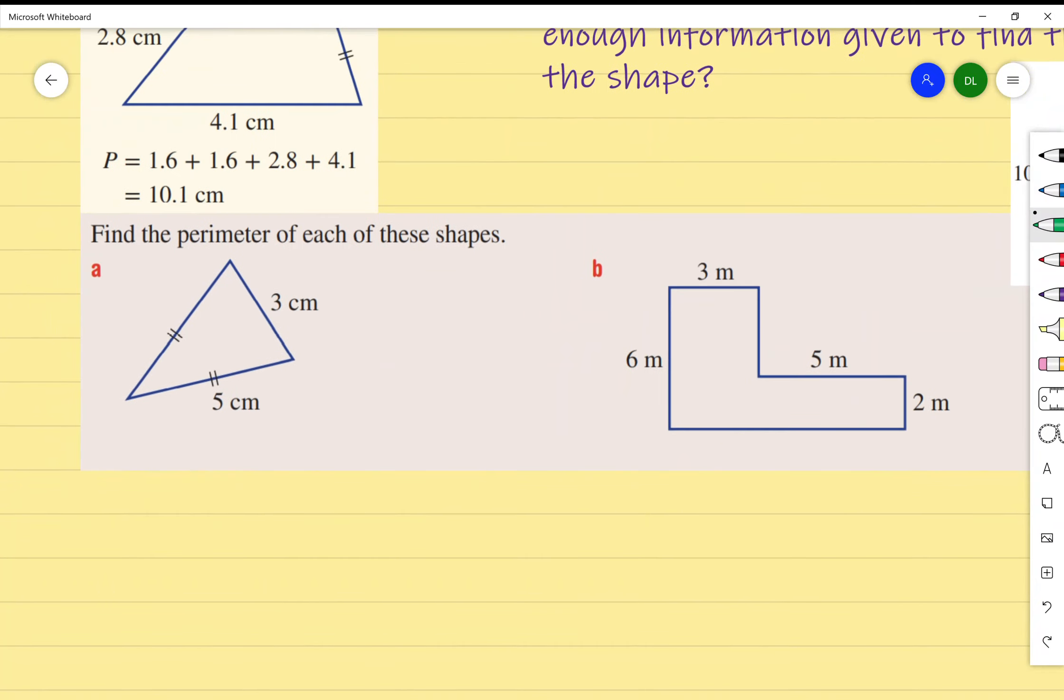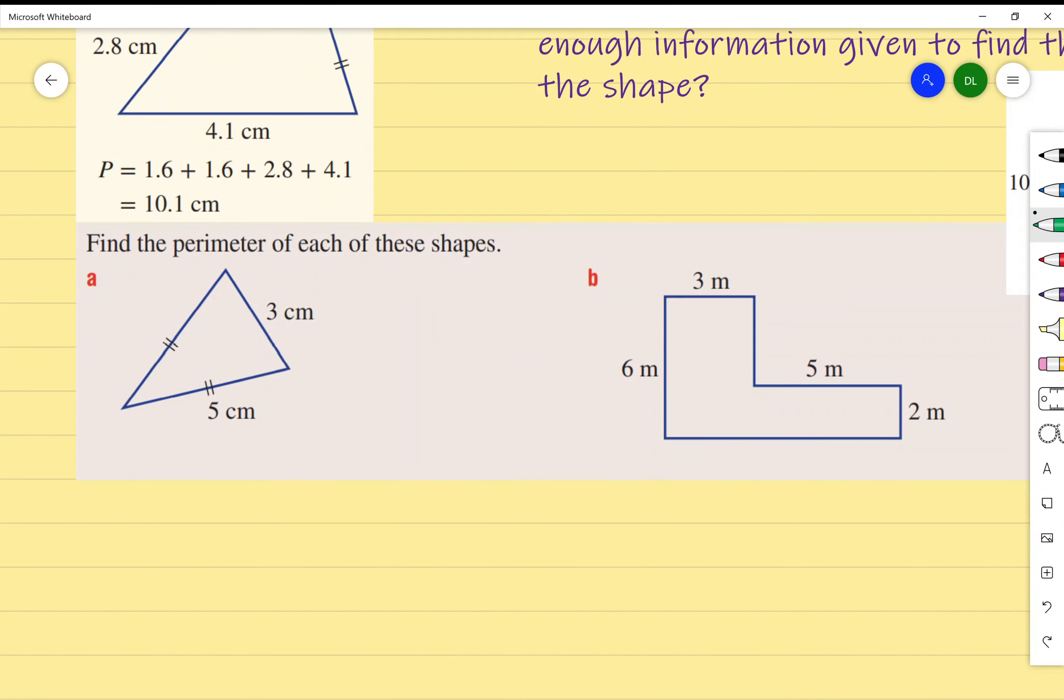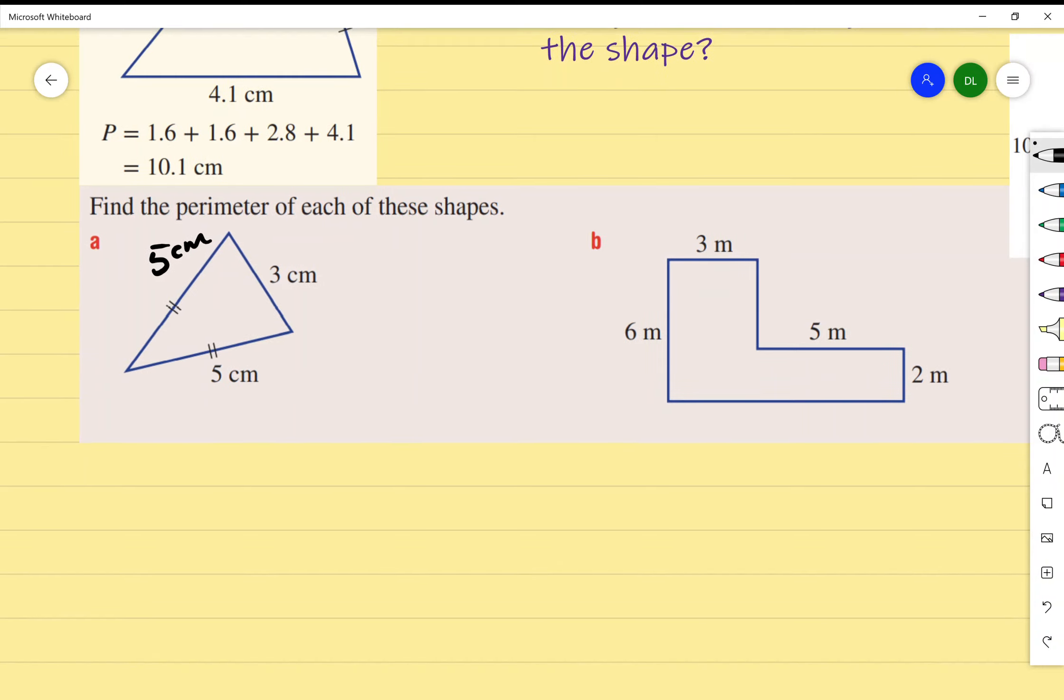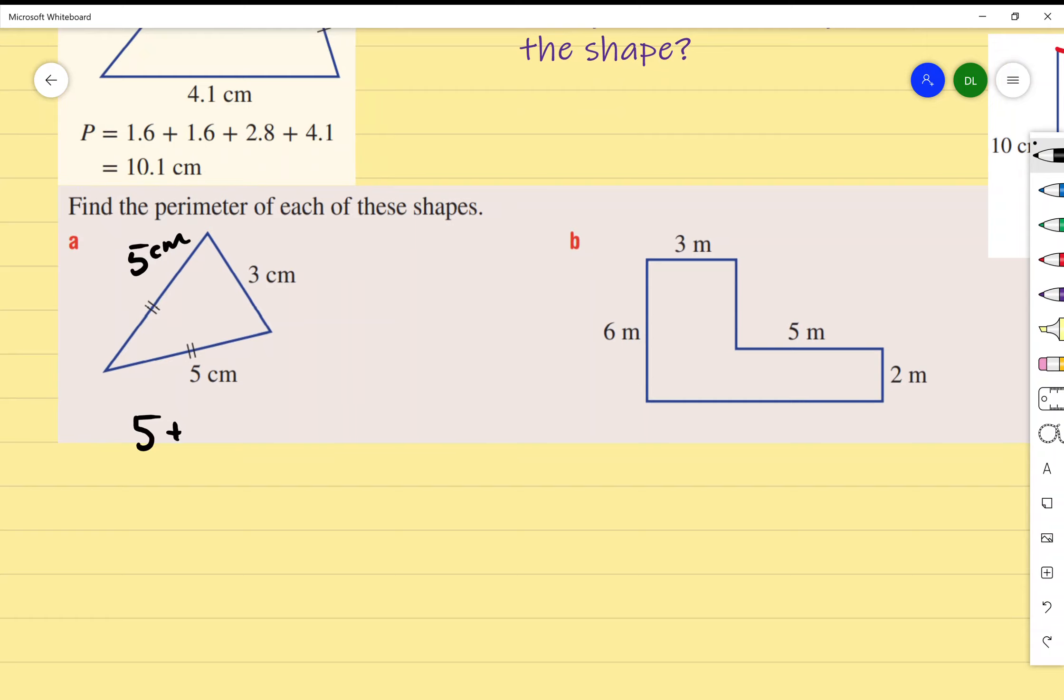Let's jump into an example. Find the perimeter of this shape—a triangle. What information are they giving me that isn't explicitly written? The other side is 5 centimeters. Am I done? I'm not done. I need to find the perimeter itself. How do I do that? Because it's perimeter, you add the side lengths together: 5 plus 5 plus 3 equals 13. Is my perimeter just 13? 13 centimeters.